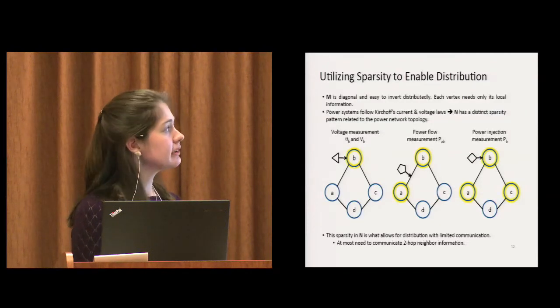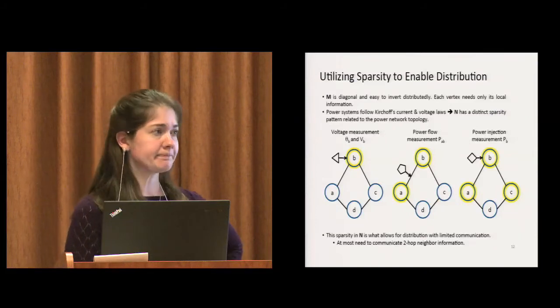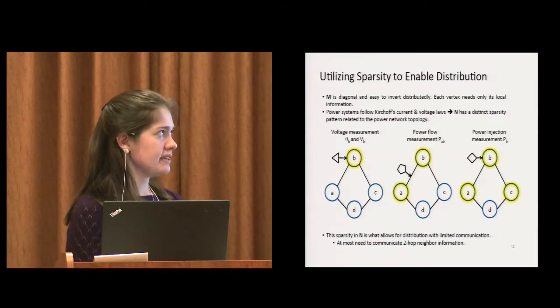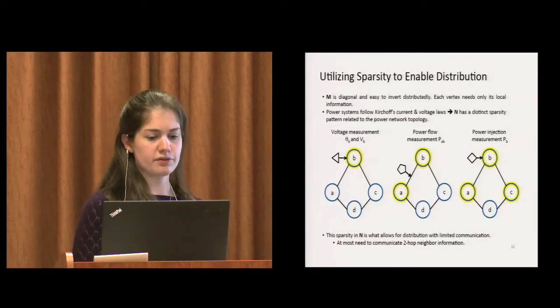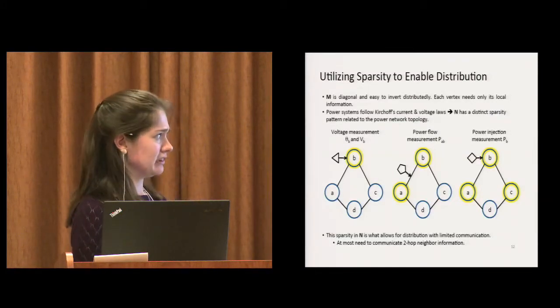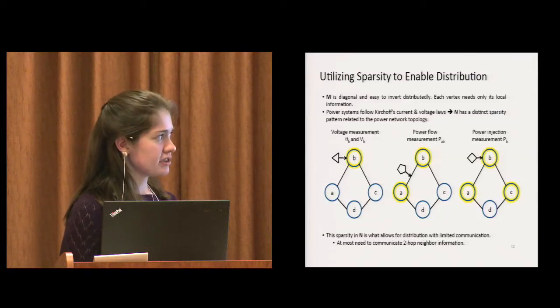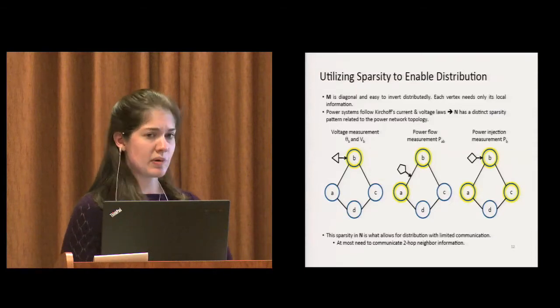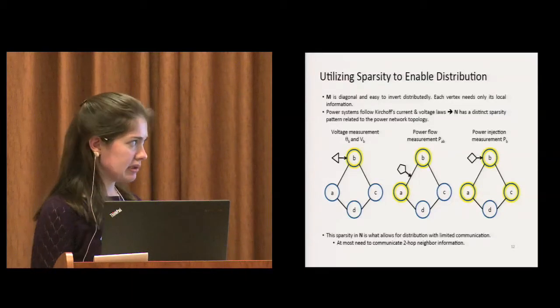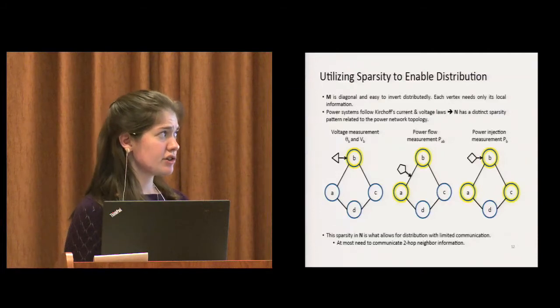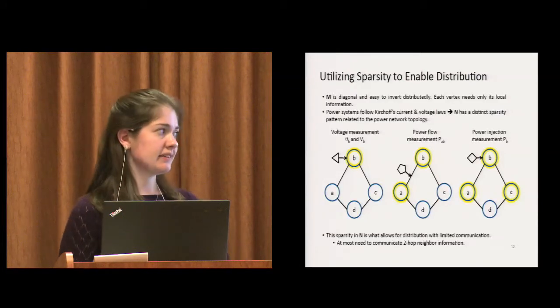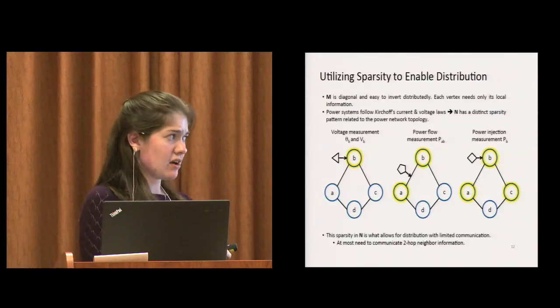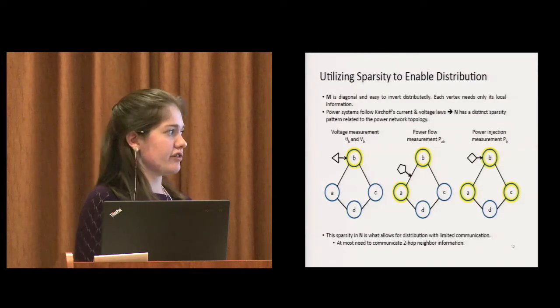Here are the three different measurements that we look at. If we measure the voltage directly at B, that measurement only depends on the voltage at B, which is kind of trivial. But for power flow measurements, if you measure the power flow between A and B, that measurement only depends on the voltage at A and B. Lastly, if you measure power injection at B, that measurement depends only on the voltage at B and B's neighbors, A and C, and not anything further out in the network.